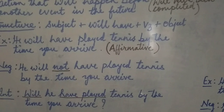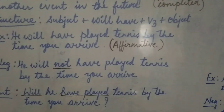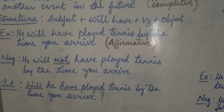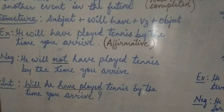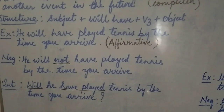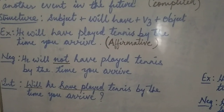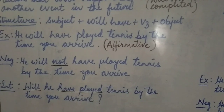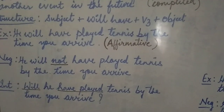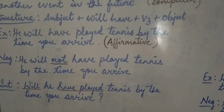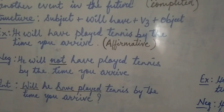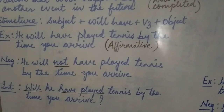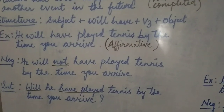Now let's come to the negative sentence. In a negative sentence, you need to add the negative word 'not,' and it will be placed between the two auxiliary verbs — that is, between 'will' and 'have.' So the sentence becomes: He will not have played tennis by the time you arrive.